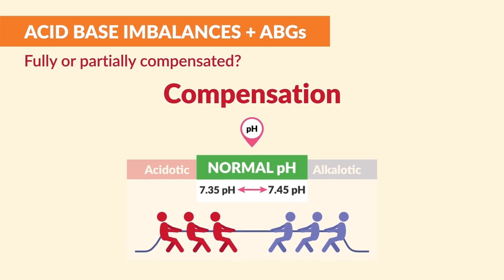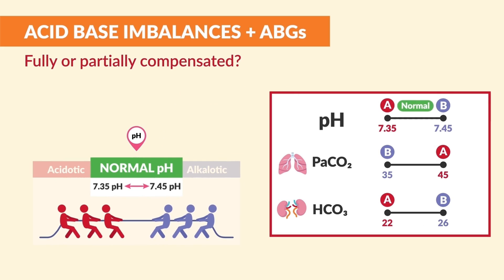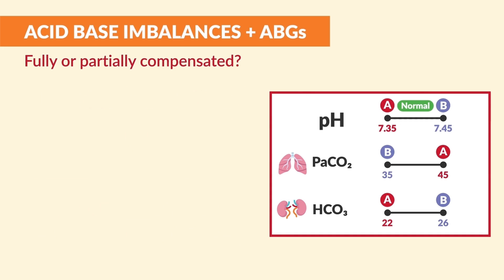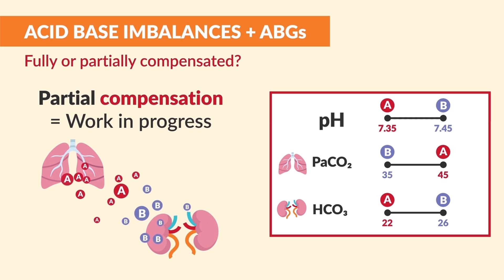Think of compensation as finding that common ground of balance. A little recap: if the pH is normal, between 7.35 and 7.45, this is full compensation. And if the pH is not normal, we have partial compensation — basically, that work in progress.